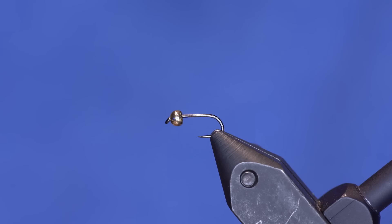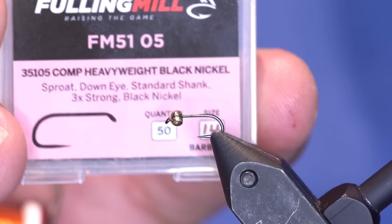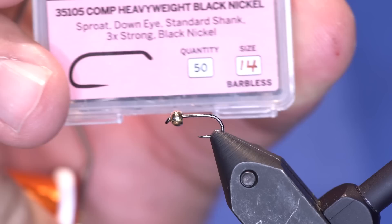This hook's kind of cool too. It's a newer hook - the Fulling Mill heavyweight competition hook. This one's a 14. They run a little bit small, so this is going to tie a little bit more like a 16.